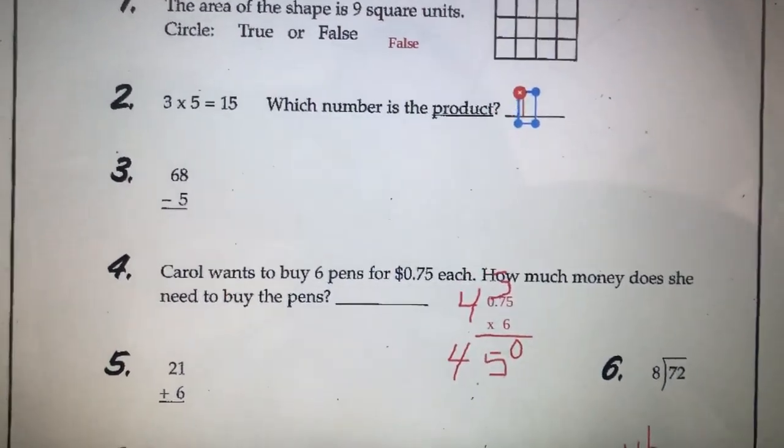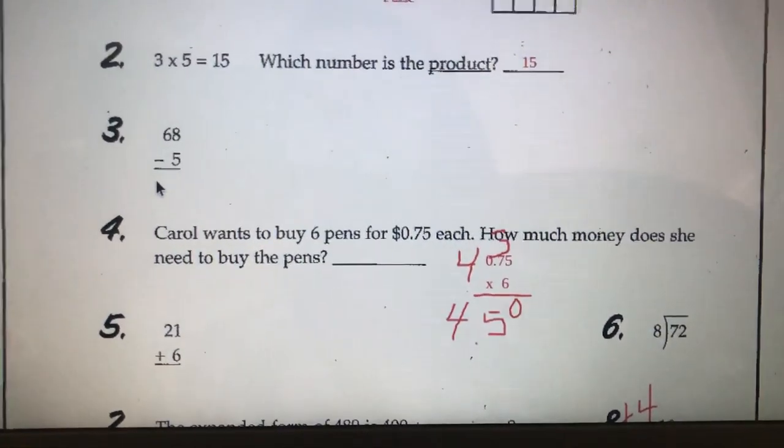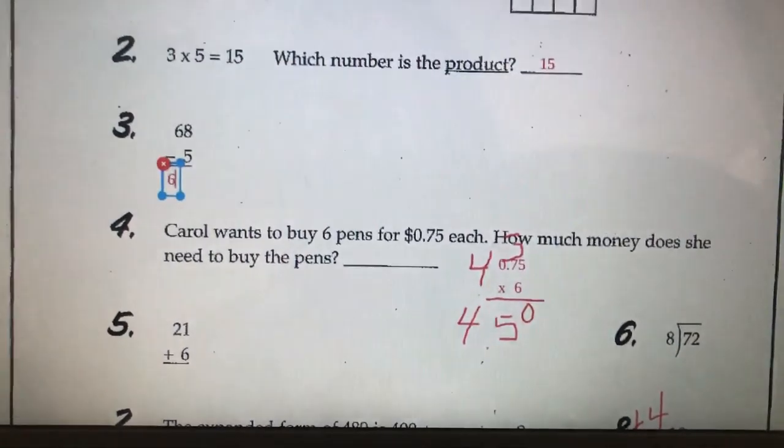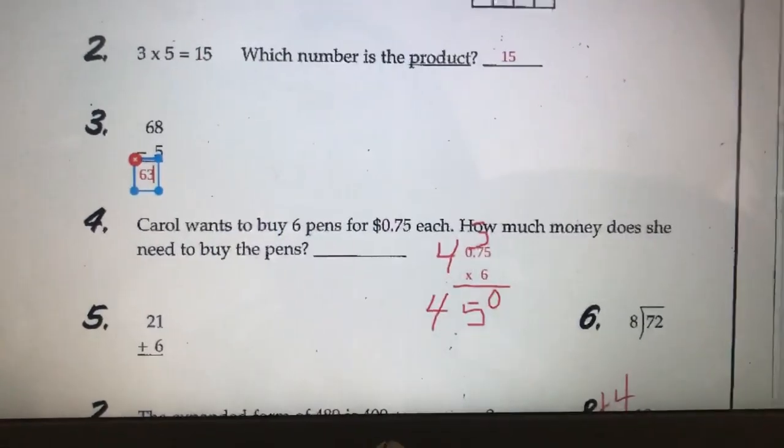68 minus 5, 8 minus 5 is 3, 6 minus nothing is 6. So, we have 63.